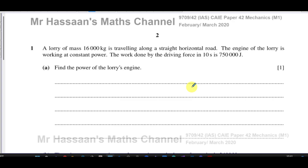It's about power and energy, I guess, the first part of it. So it's a lorry of mass 16,000 kilograms. It's traveling along a straight horizontal road. The engine of the lorry is working at a constant power. The work done by the driving force in 10 seconds is 750,000 joules. Find the power of the lorry's engine.